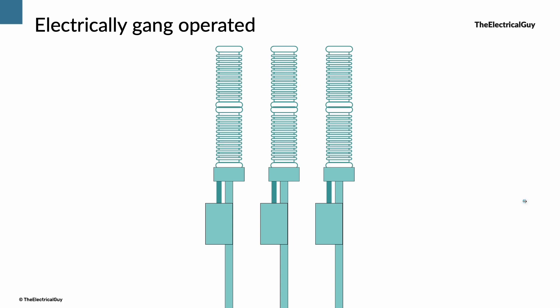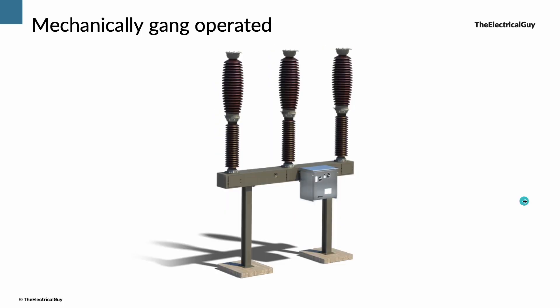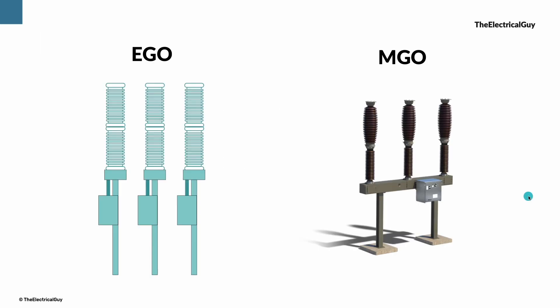If the breaker is mechanically gang operated type, then it cannot perform single phase auto reclosing duty. It can only perform three phase auto reclosing duty wherein all the three phases are reclosed. Let me know in the comment section for which ratings generally MGO type breaker and EGO type breaker are used.